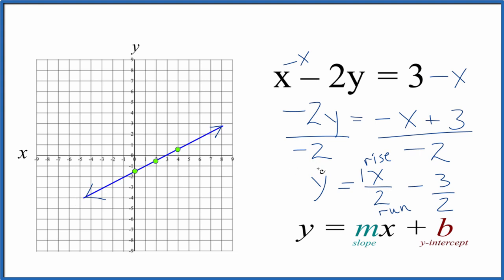If you were to use a table of values to do this, you would get the same graph. This is Dr. B graphing x minus 2y equals 3. Thanks for watching.